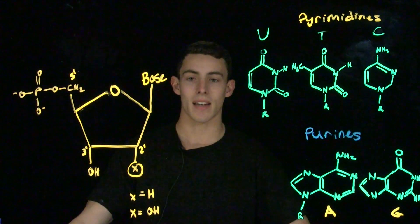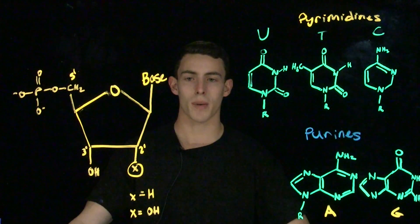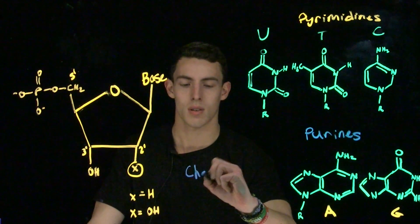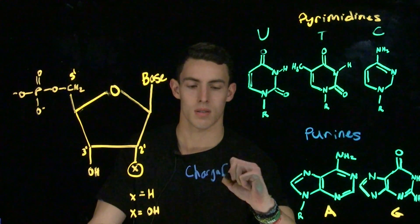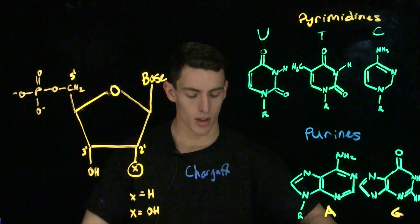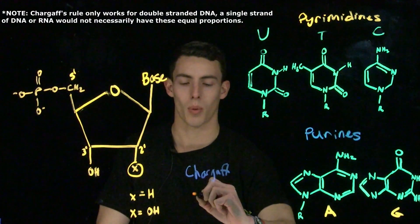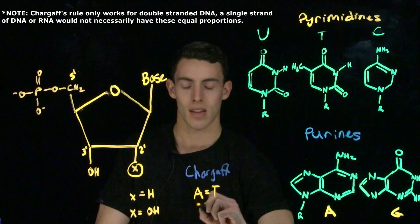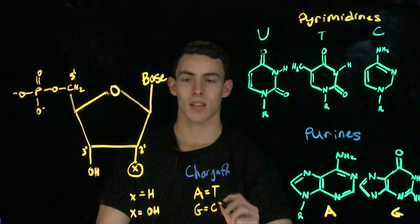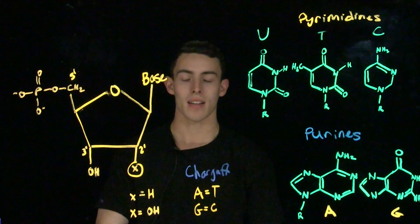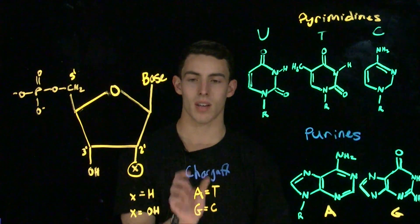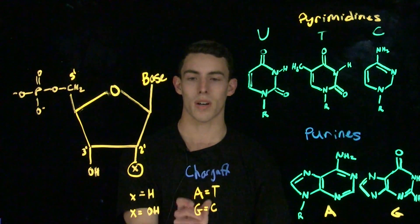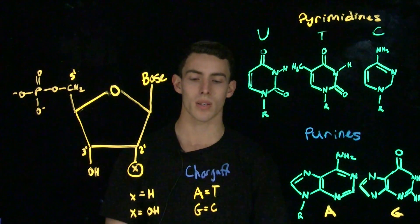The binding properties of DNA and RNA with respect to their base pairing was discovered by Chargaff. Chargaff's rule states that the proportion of adenine is equal to thymine, and that guanine is equal to cytosine, meaning that if you added up the amounts of adenine and thymine and the amounts of guanine and cytosine, they would add up to 100.